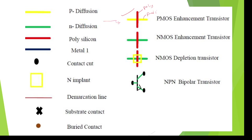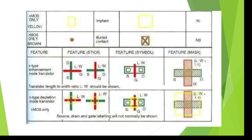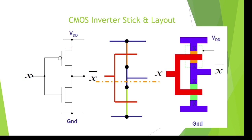Horizontally poly and vertically yellow — both are correct, both ways you can use for PMOS enhancement mode transistor. For depletion mode transistor, implant is compulsory. For bipolar transistor, this is the BJT stick symbol. The NMOS transistor symbol shows source, gate, and drain — either green over poly or poly over green. Red color poly is horizontal or green is vertical; both ways you can use the transistor.